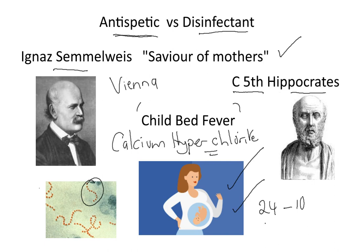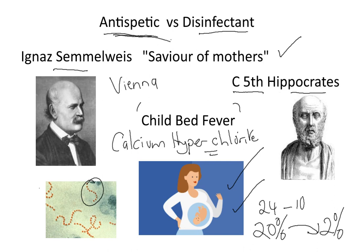What happened was that the disease fell from 20% — 20% of pregnant mothers. So Ignaz Semmelweis had discovered the use of antiseptics to kill microorganisms.